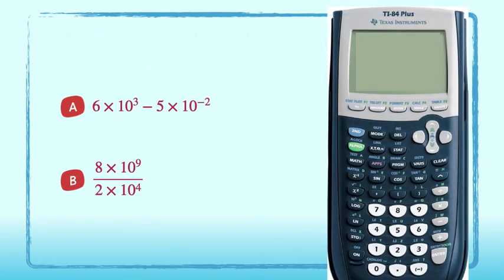Let's take a look at part A: 6 times 10 to the 3rd minus 5 times 10 to the negative 2nd. If you are unsure how to enter a negative symbol, just look for this little negative symbol in parentheses on your calculator. Do not just use the minus sign, as this is a different function altogether. Enter. The answer is 5,999 and 95 hundredths.